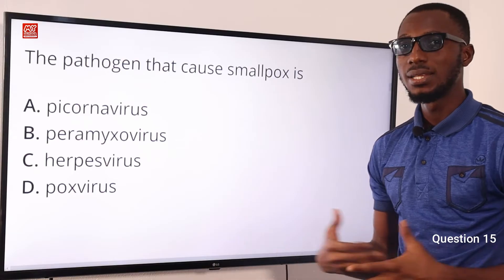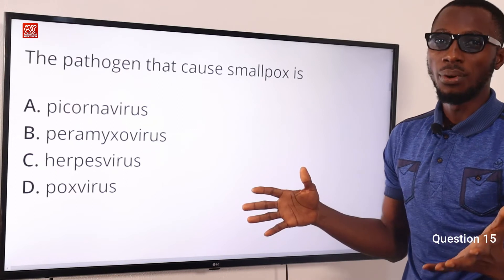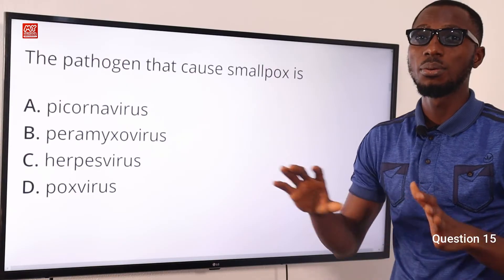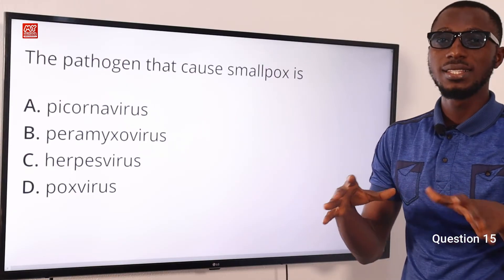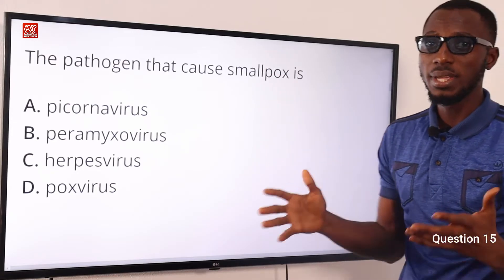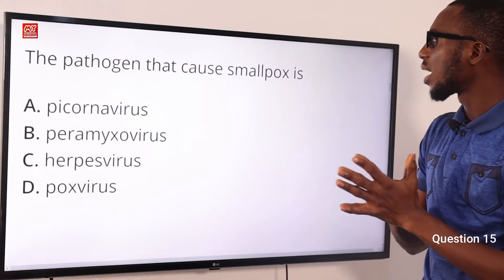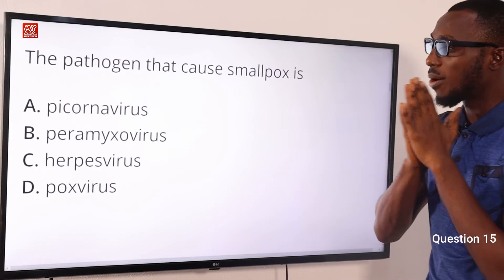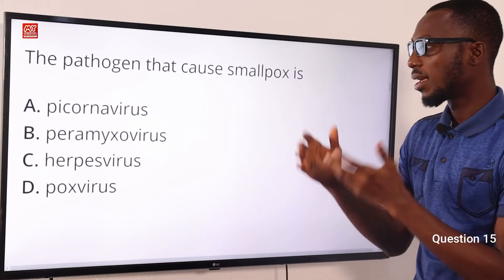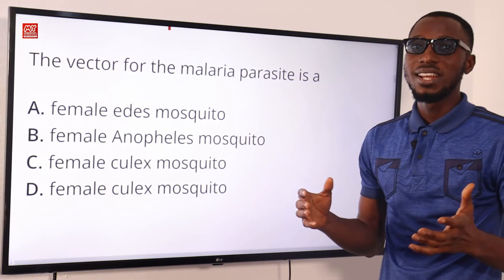Question 15: The pathogen that causes smallpox is the pox virus. Its diameter is about 200 nm, and it is airborne. Smallpox is believed to have been eradicated, though there may still be rare cases. The correct option is D: pox virus.